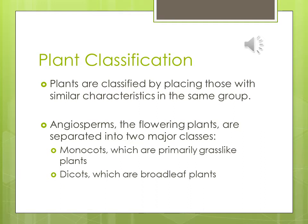Plant classification: plants are classified by placing those with similar characteristics in the same group. One classification is angiosperms — our flowering plants. Both shrubs and grasses flower. We've broken down these flowering plants — grasses and broadleaves — into two different classes: monocots and dicots. For those who've taken HORT 162 Applied Plant Science, this is familiar information; if not, pay close attention.